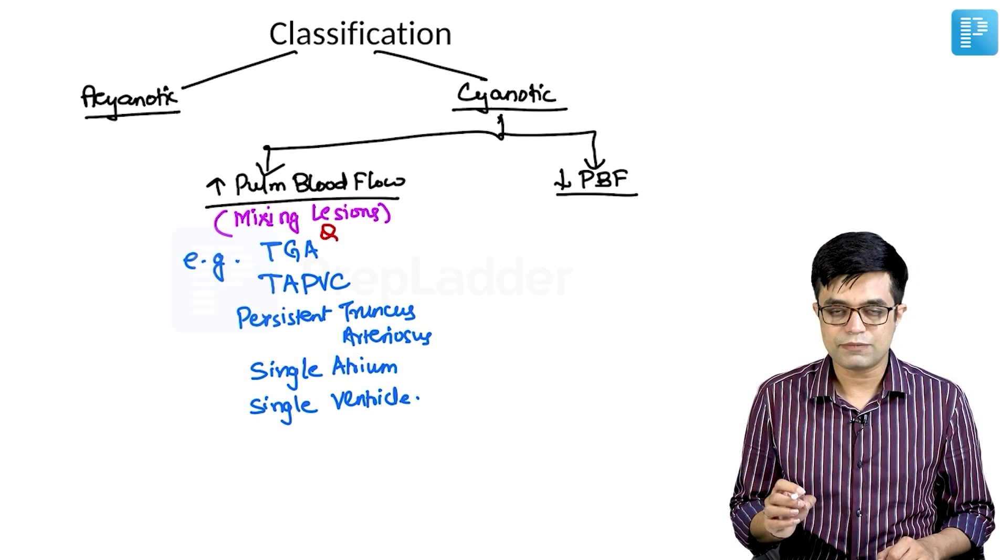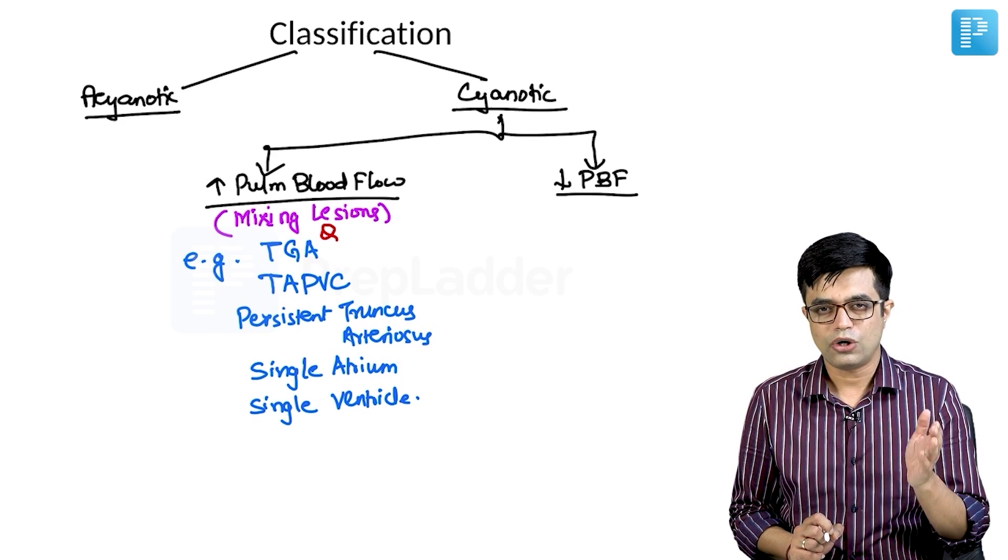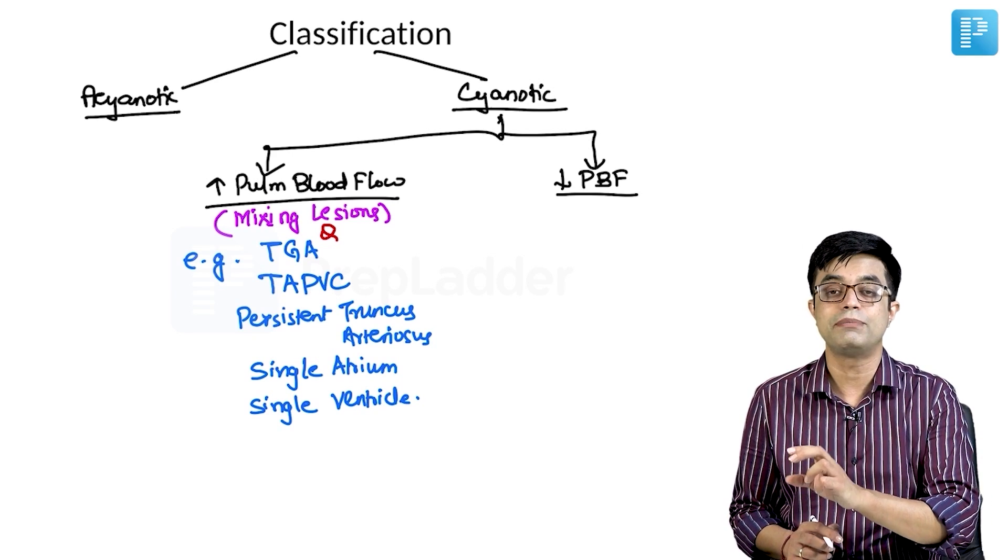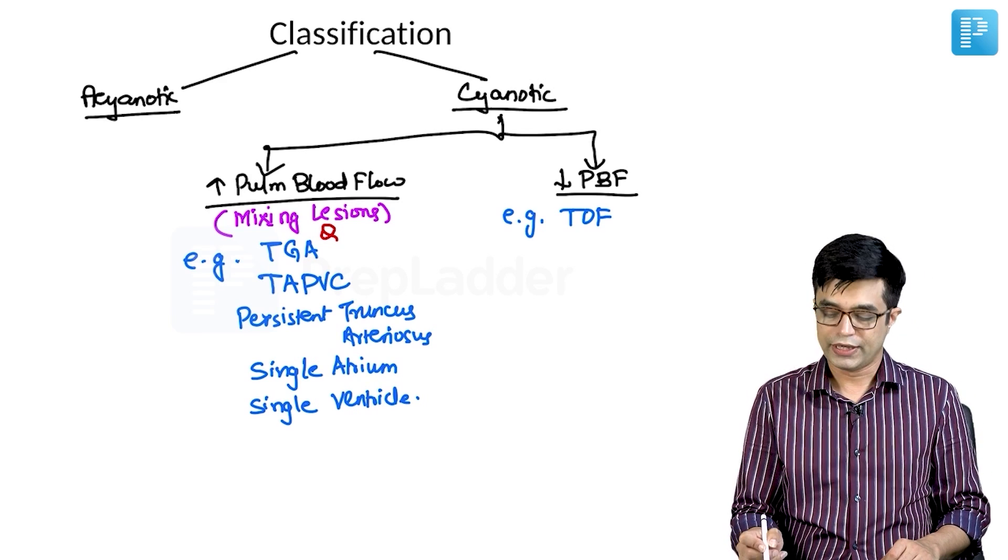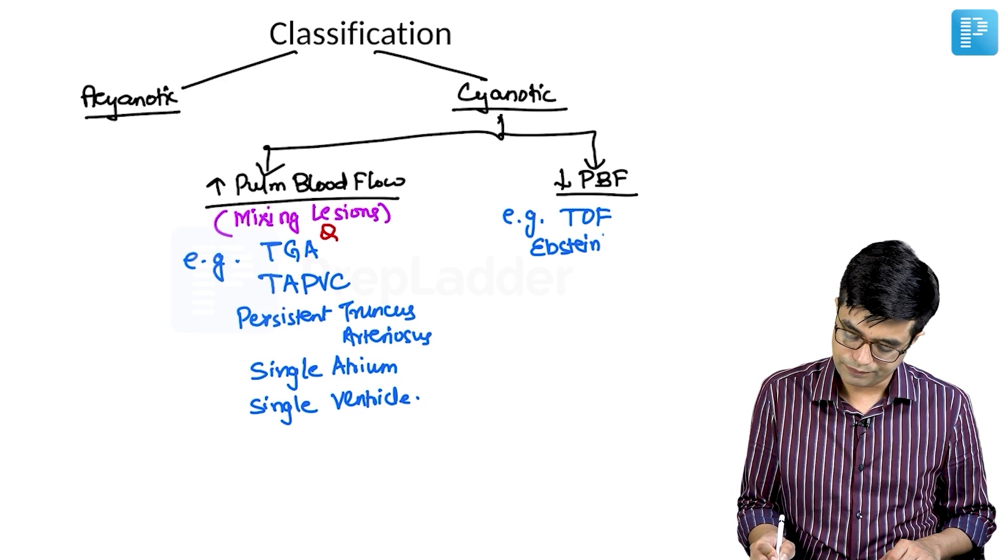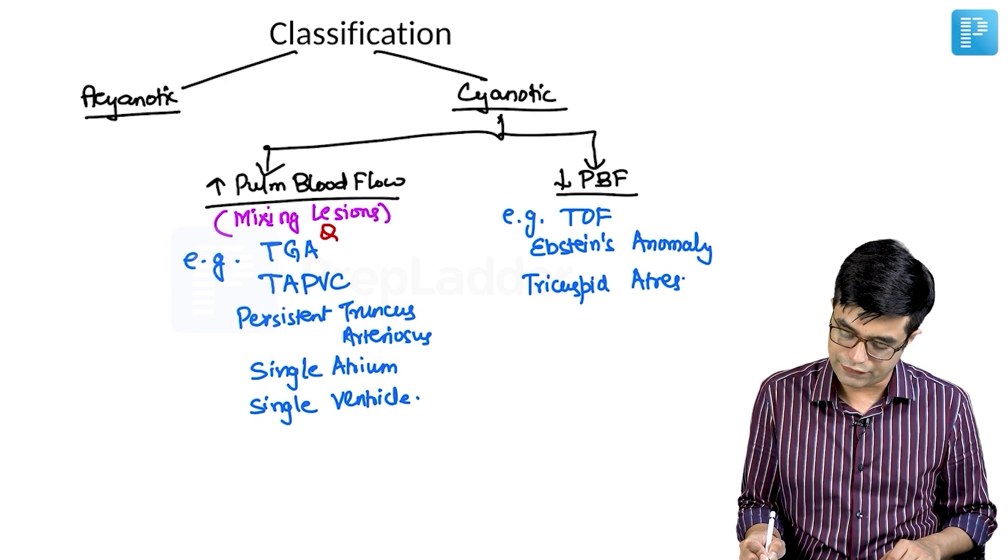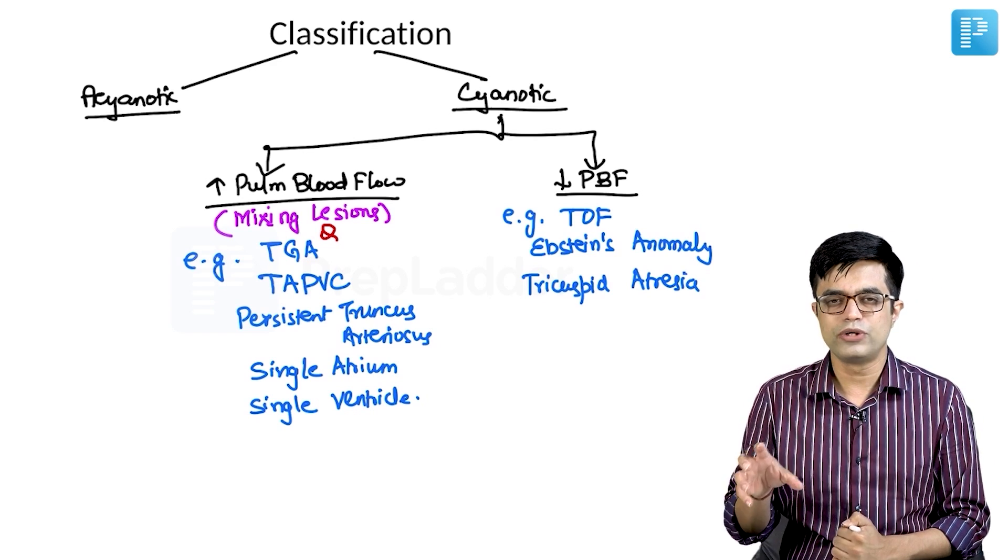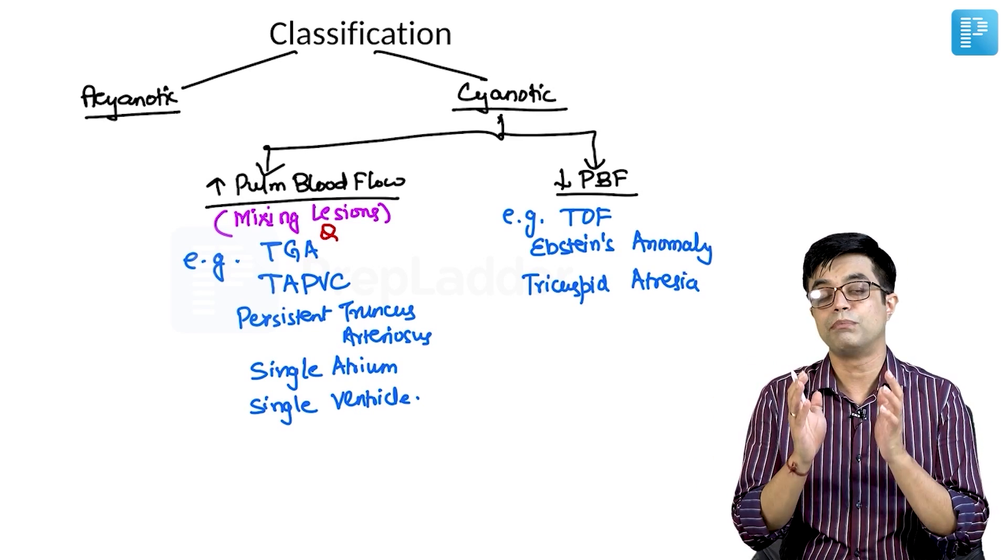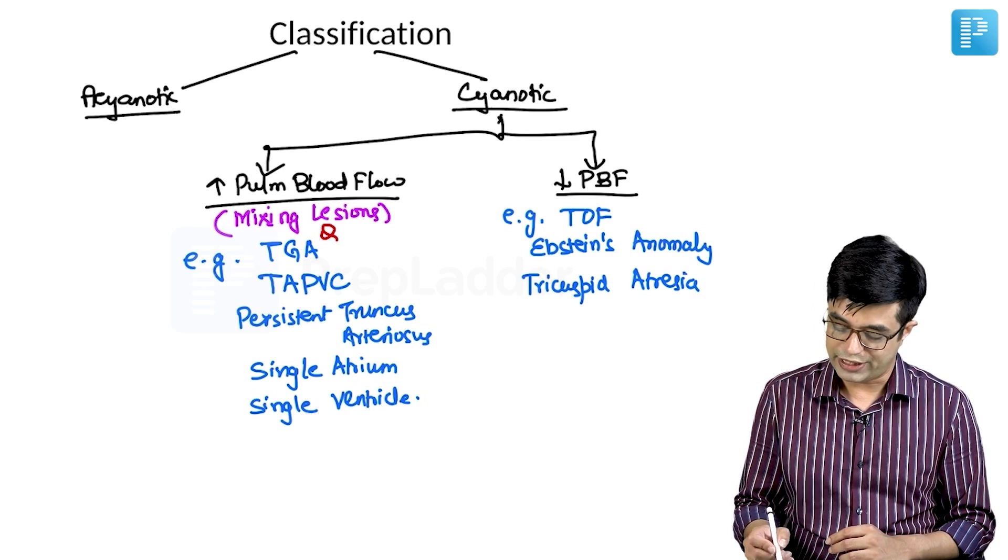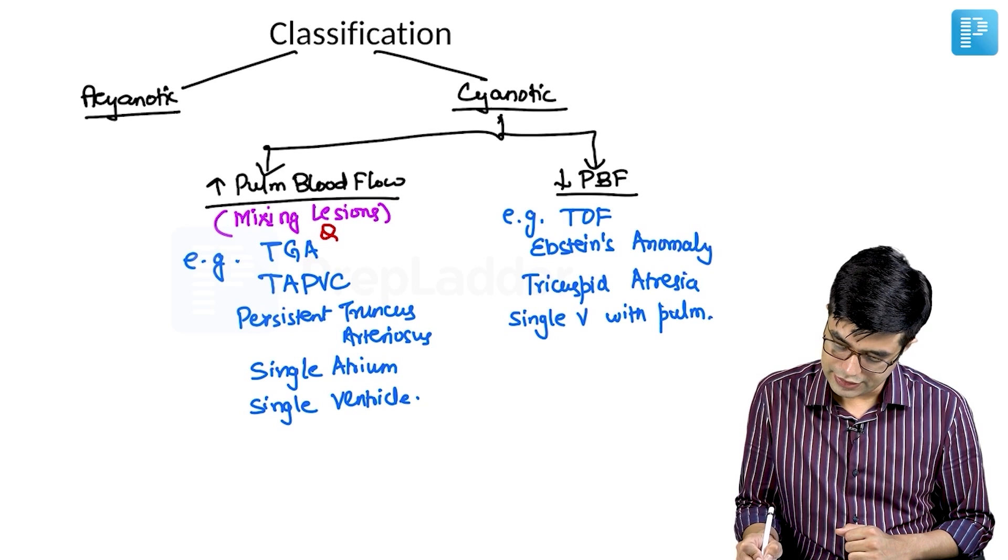Then we have decreased pulmonary blood flow. Decreased pulmonary blood flow lesions will have some degree of obstruction either at the pulmonary valve or at the level of right ventricle or in the pulmonary artery, so that the amount of blood cannot freely reach the pulmonary circulation. This will include conditions like the hallmark condition of this group, TOF - tetralogy of Fallot. It includes conditions like Ebstein's anomaly, tricuspid atresia. Remember that we are discussing only the major ones. There are other minor conditions which cannot be put into some group or are too rare. We will be taking them up individually in one of the modules separately.